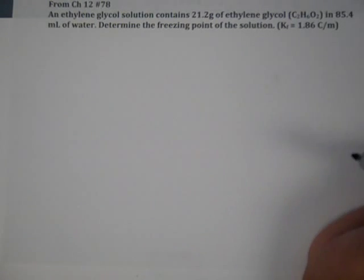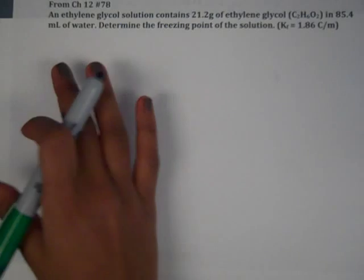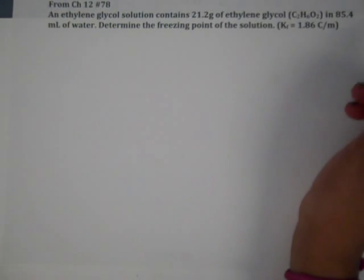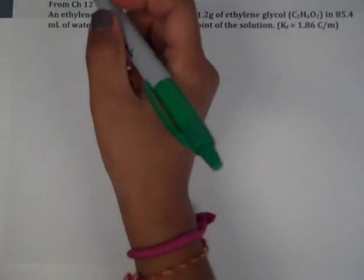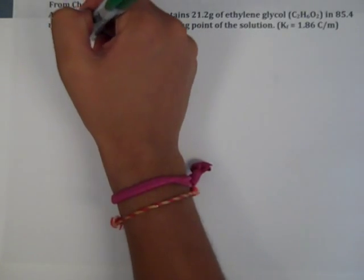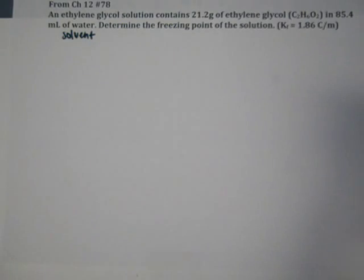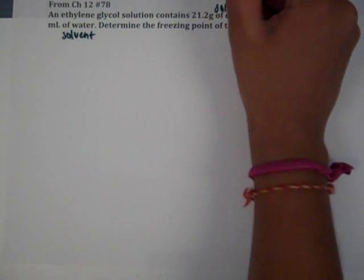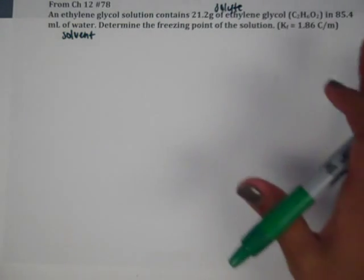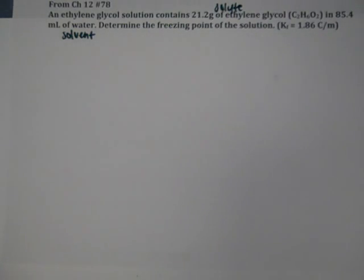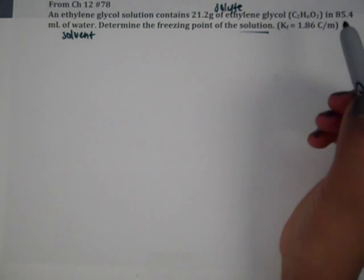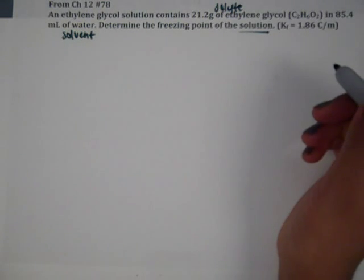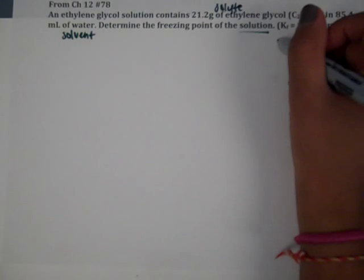Remember, freezing point is going to go down from the pure solvent water, and we have our KF. Now we have 85.4 milliliters of water which is the solvent, and 21.2 grams of ethylene glycol is the solute. It's nice to identify which one is solute, which one is solvent, and which one is solution. We're dealing with solution.